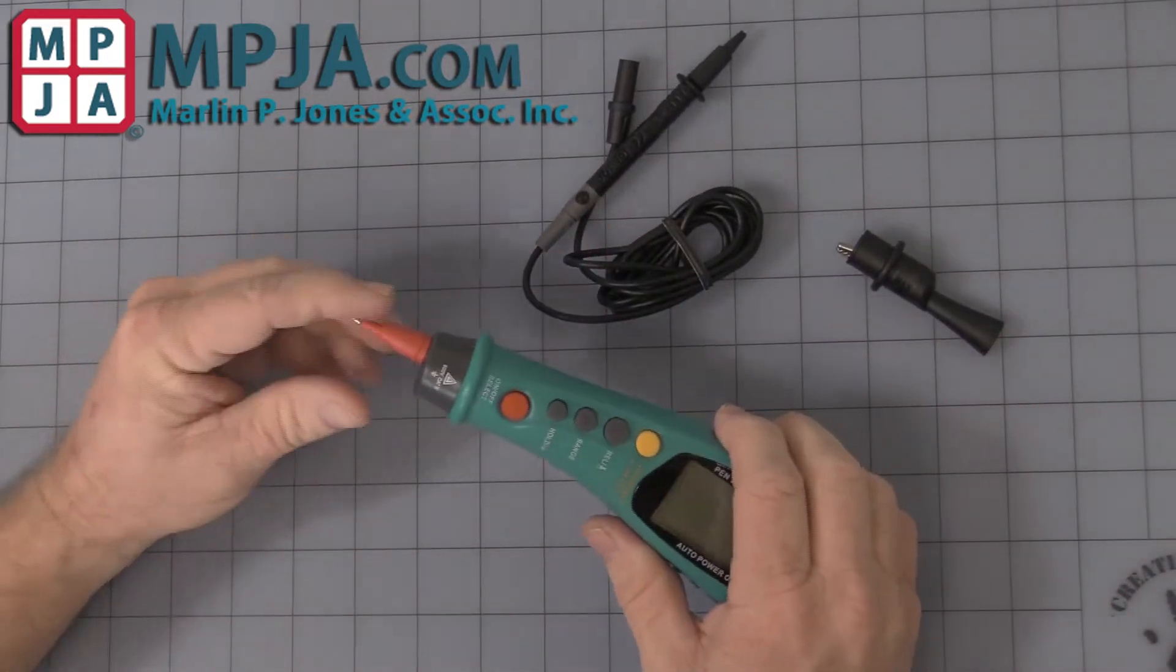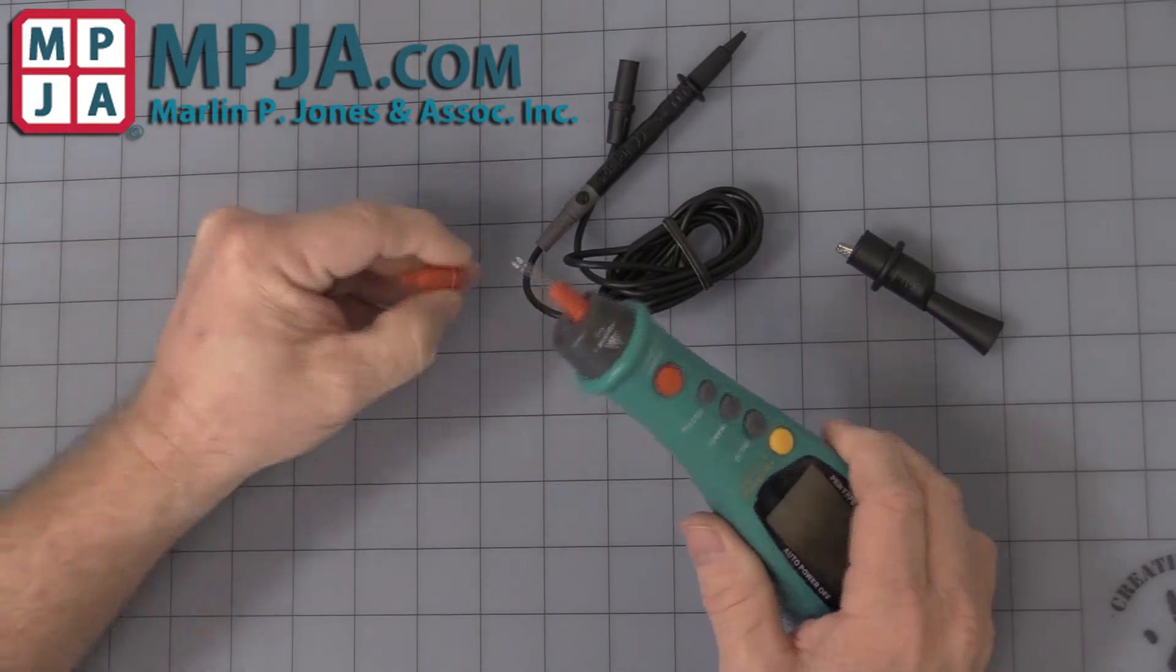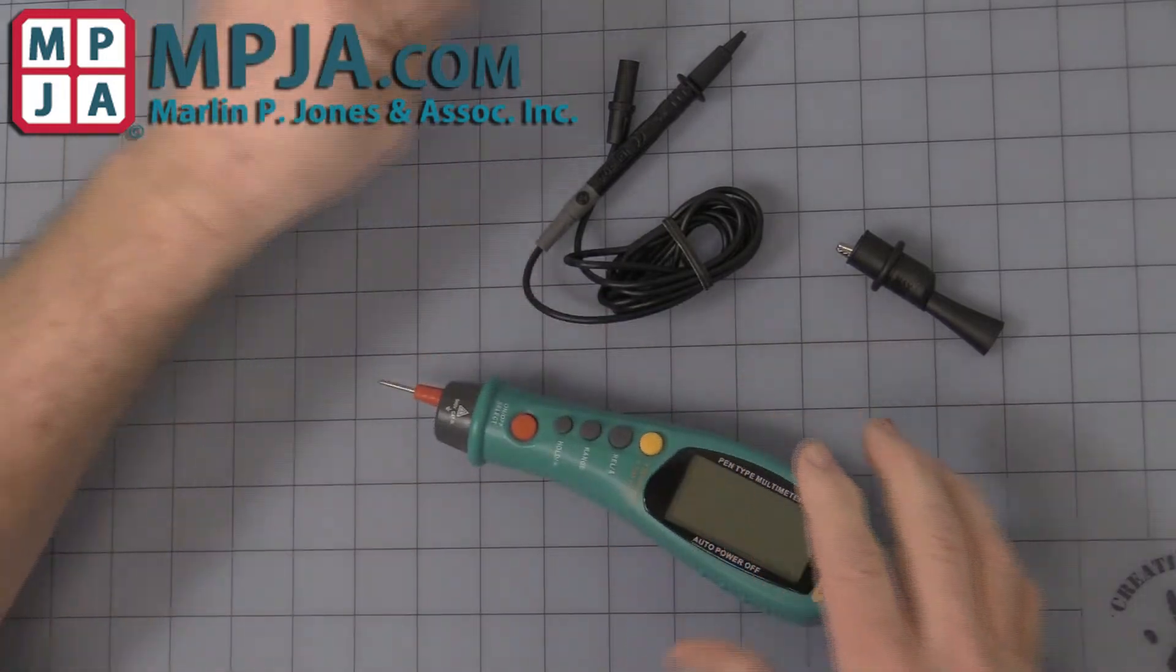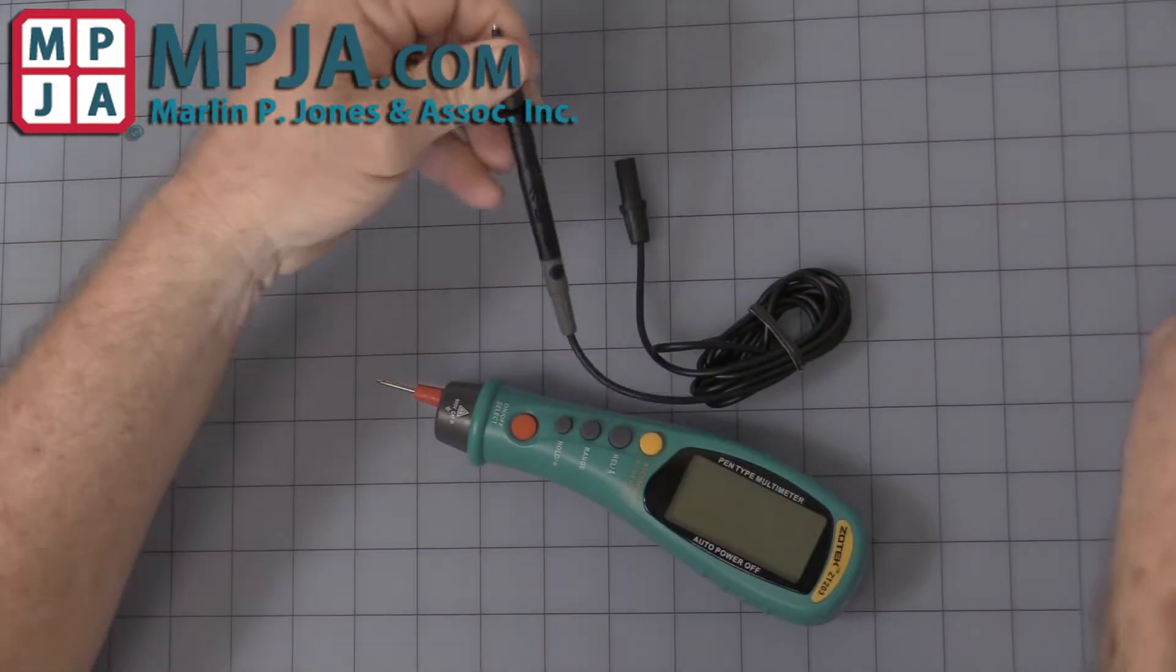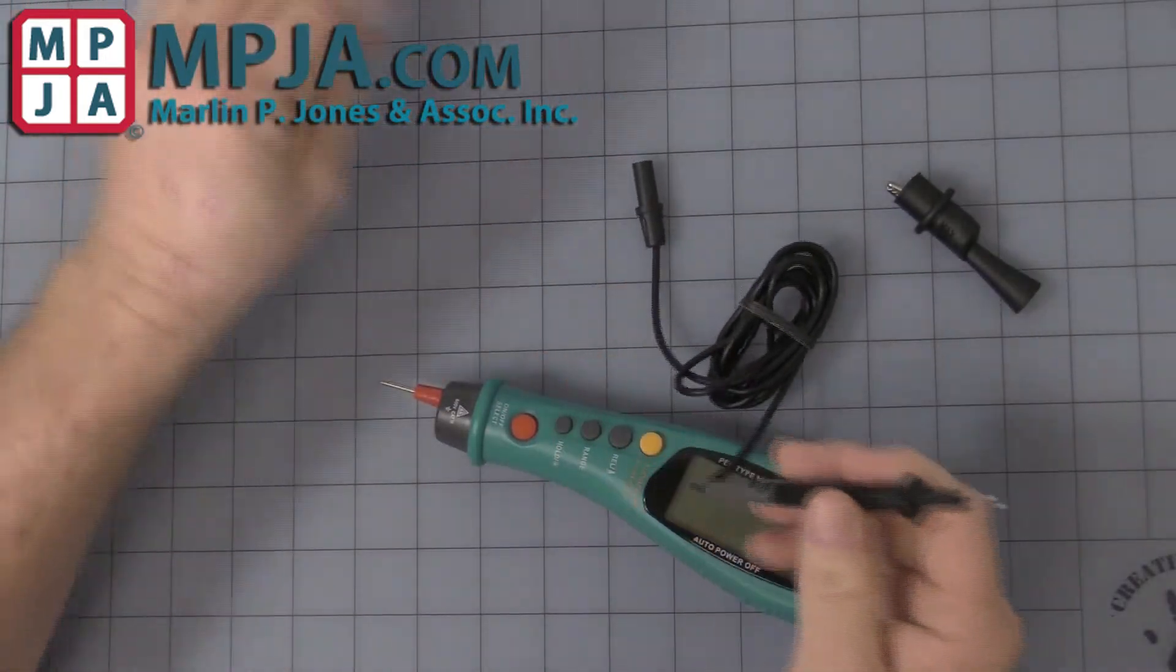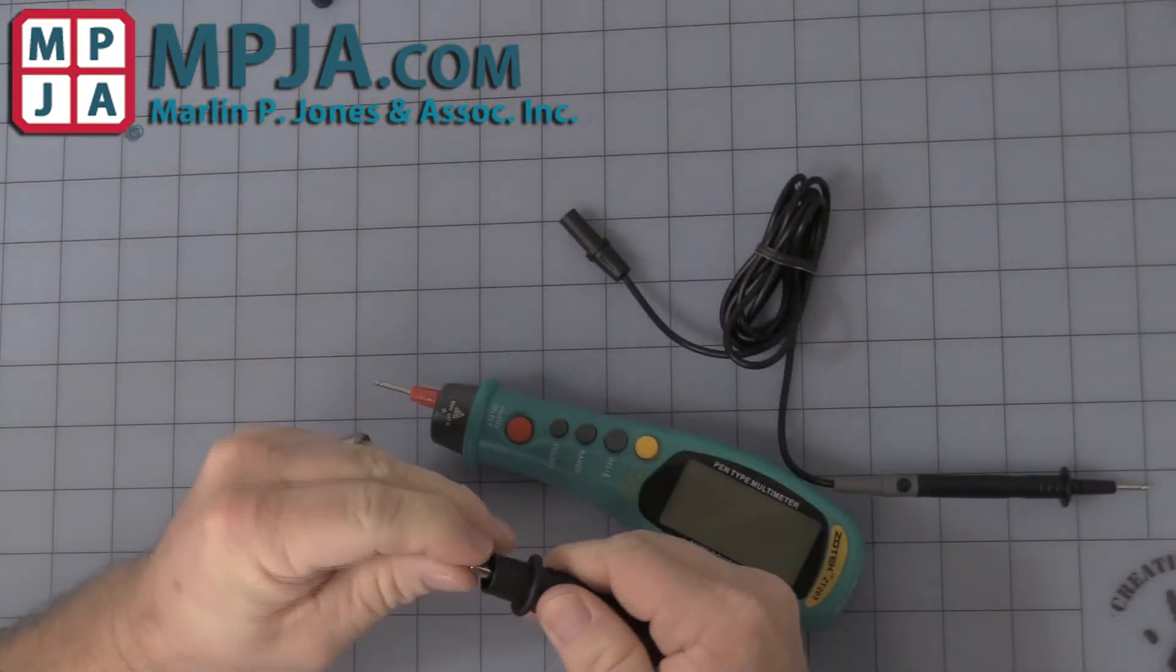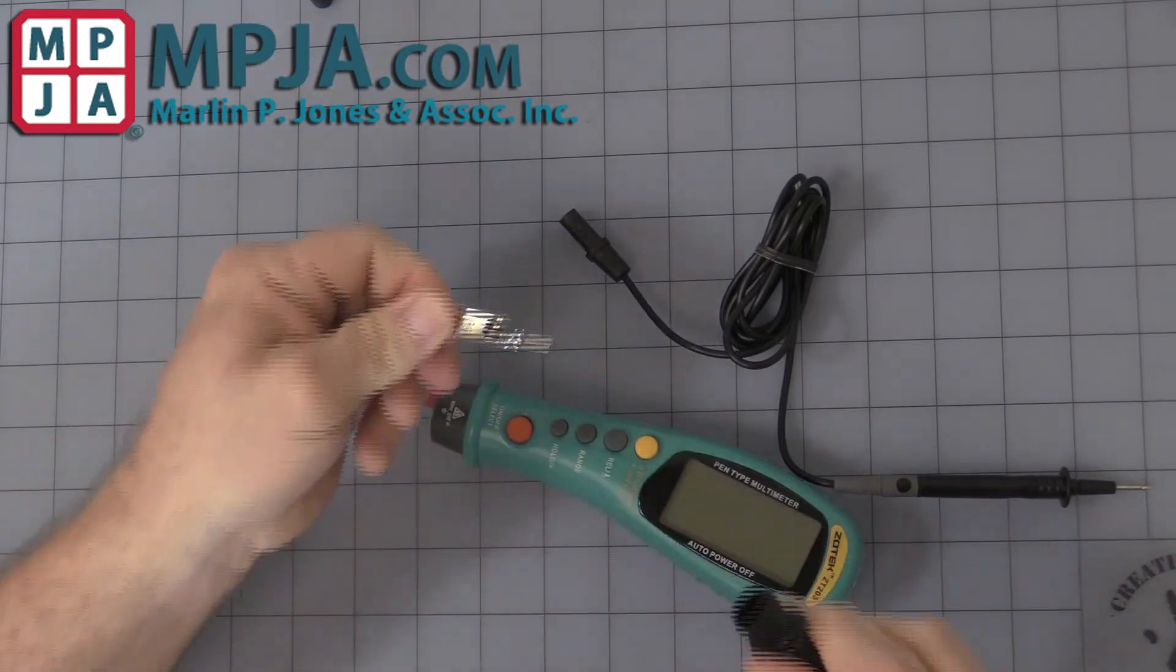First thing I'm going to do is it comes with these nice little safety covers so you can reach into little corners easily, not shorting anything out. It comes with the alligator clip, let me just go ahead and pull it out of the rubber boot so you'll see it.